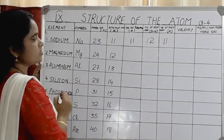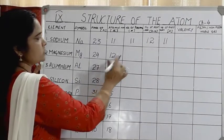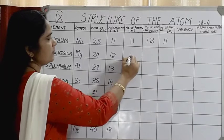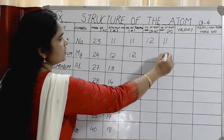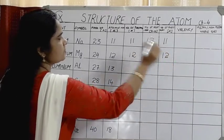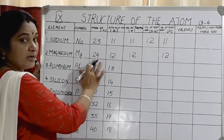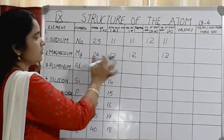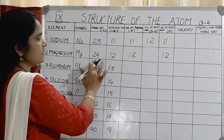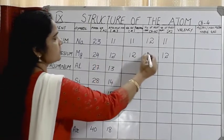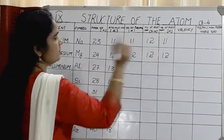Next is magnesium, with atomic number 12. So the number of protons is 12, and the number of electrons is also 12. The mass number is 24. To find neutrons: 24 minus 12 = 12. So the number of neutrons in magnesium is also 12.